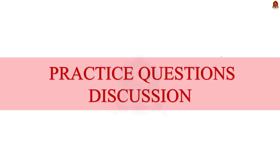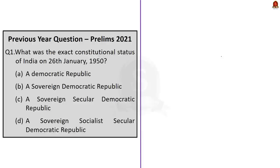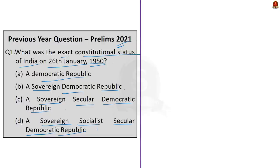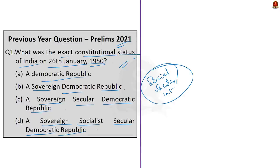Now let us move on to the preliminary practice questions. The first question was asked in the 2021 preliminary examination: 'What was the exact constitutional status of India on 26th January 1950?' Options: A) Democratic Republic, B) A Sovereign Democratic Republic, C) A Sovereign Secular Democratic Republic, D) A Sovereign Socialist Secular Democratic Republic. Since the words 'socialist,' 'secular,' and 'integrity' were added by the 42nd Constitutional Amendment Act of 1976, they were not present in 1950. So we eliminate options C and D. The correct answer is option B — a Sovereign Democratic Republic.